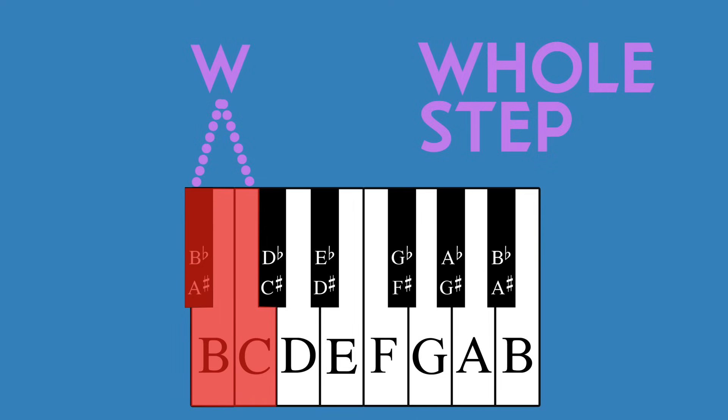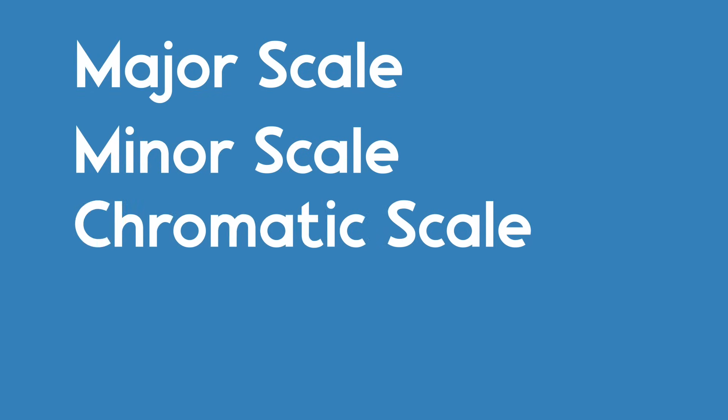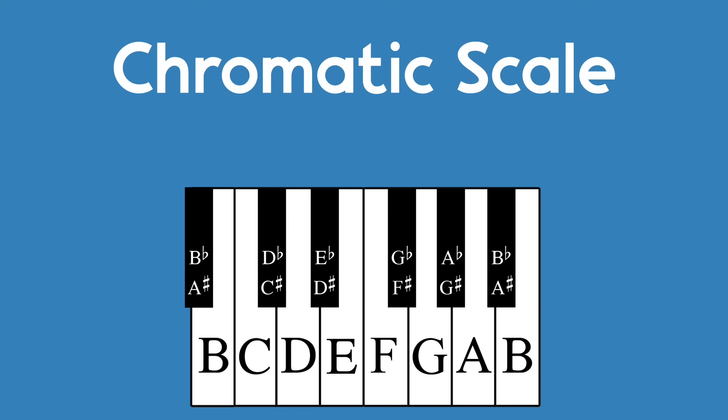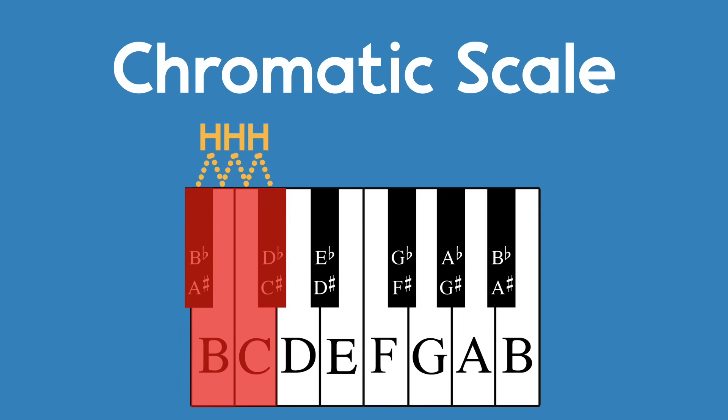Now let's use the half step and the whole step to build three of the most common scales in Western music: major, minor, and chromatic. Let's start with chromatic. Every note in the chromatic scale is one half step apart. So if we start on B flat and move up the keyboard by half steps, we have the chromatic scale.